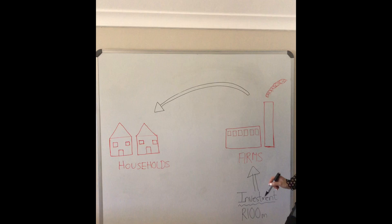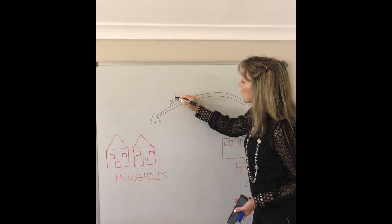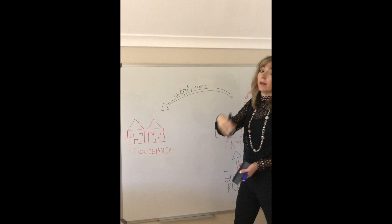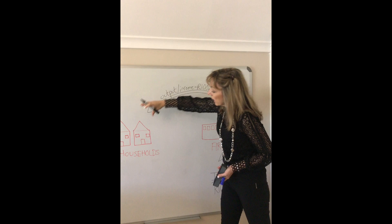This is going to increase firms output by a hundred million. So firms will employ people and produce a hundred million rands worth of output which will then translate into income which is earned by your labour, your entrepreneur earns profit, etc. So a hundred million rands worth of output is created which translates into a hundred million rands worth of income that flows back to households.